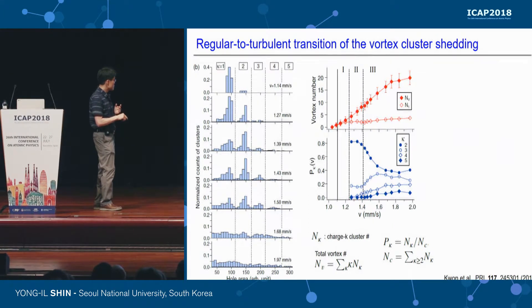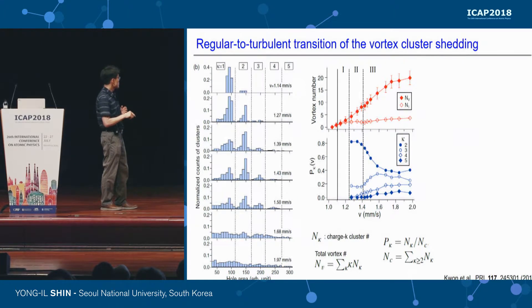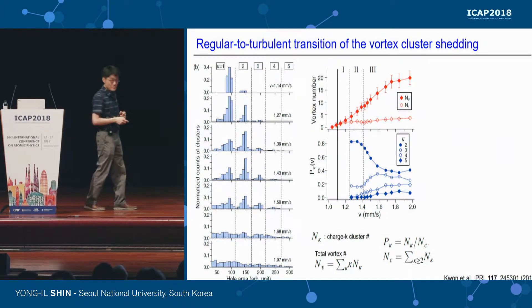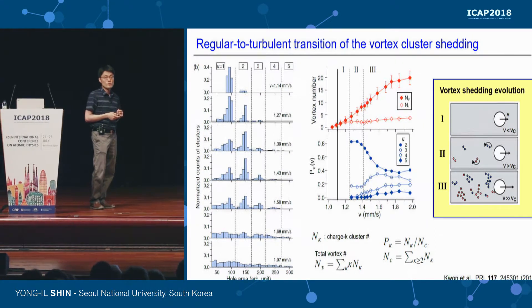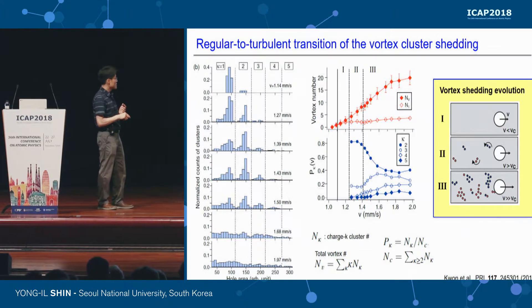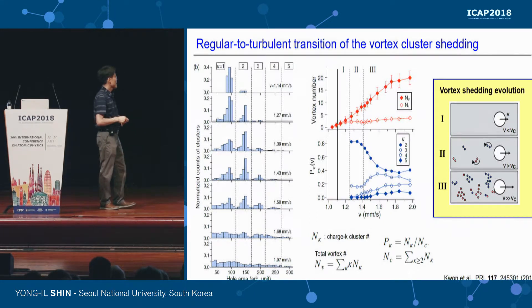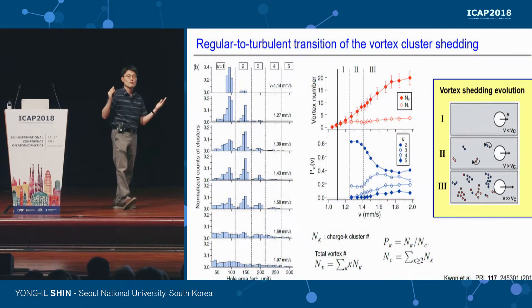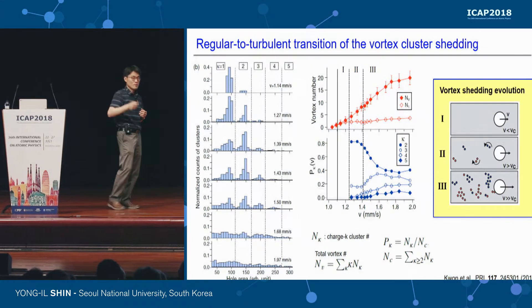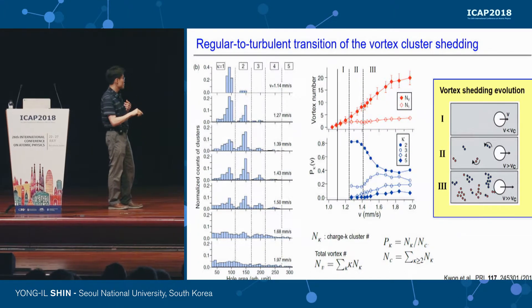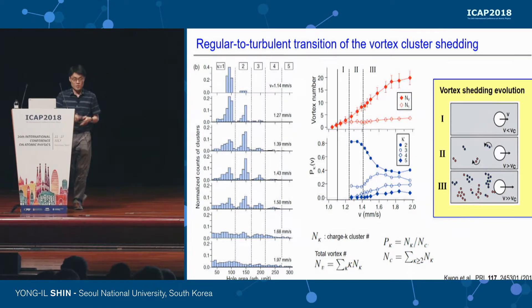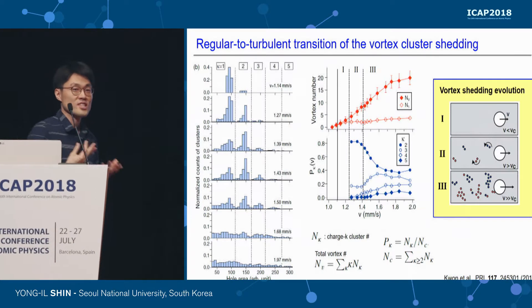Just above that, when we increase velocity a little more, we have an irregular regime where the vortex cluster charge number becomes very irregular, but vortex cluster shedding is still occurring. From this observation, we can present this picture for the evolution of quantum vortex shedding: below critical velocity, laminar flow with no shedding; just above, a periodic regular vortex shedding region where clusters are charged by two; and at high velocity, still vortex cluster shedding but with irregular charge numbers — a regular-to-irregular transition.